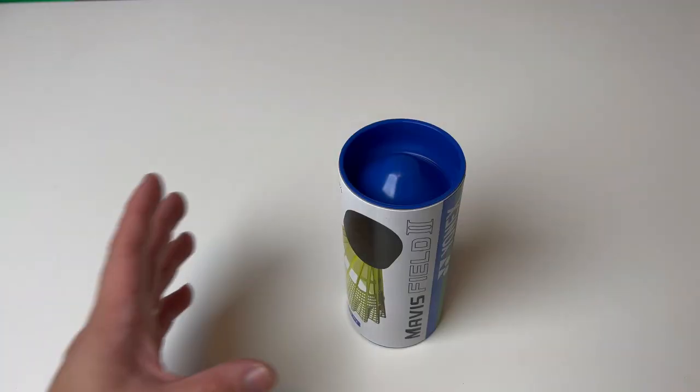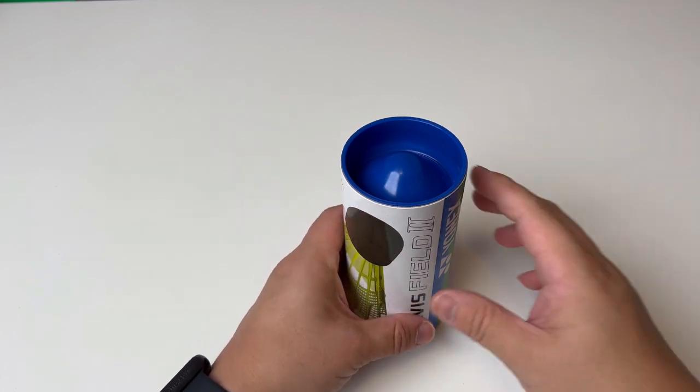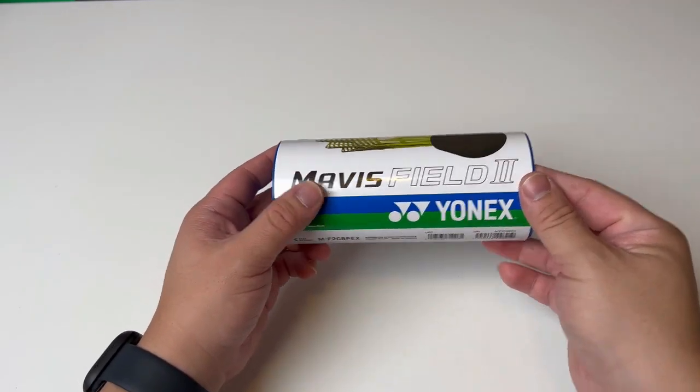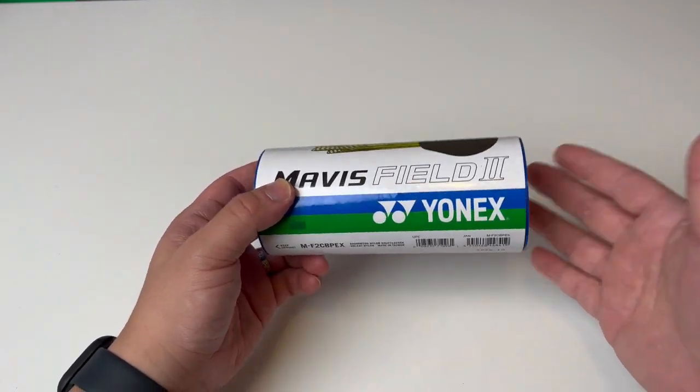Okay everybody, here it is, the new Yonex Mavis Field 2 nylon shuttlecock. On first looks at this shuttle, it looks like I just purchased some mortars from World War One.